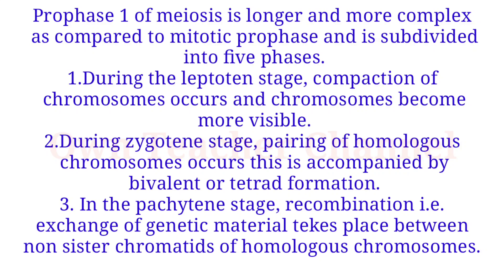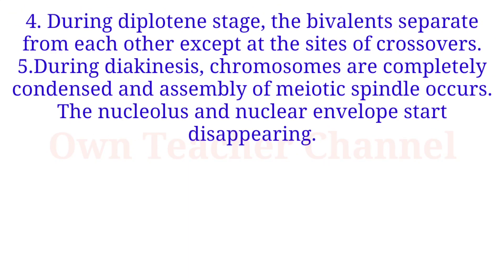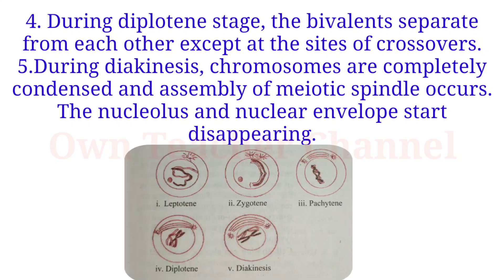In the pachytene stage, recombination — for example, exchange of genetic material — takes place between non-sister chromatids and homologous chromosomes. During the diplotene stage, the bivalent separates from each other except at the site of crossovers.